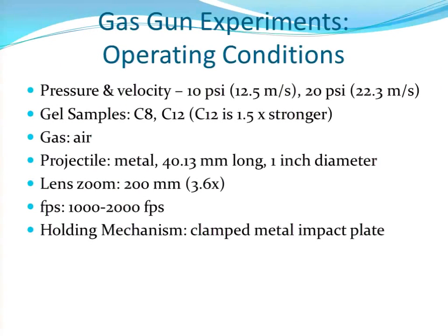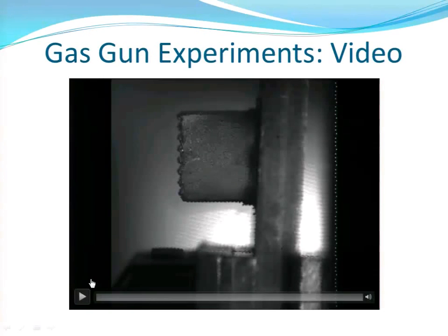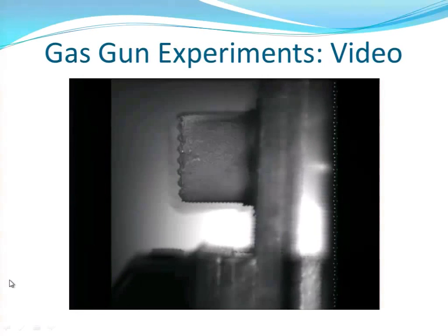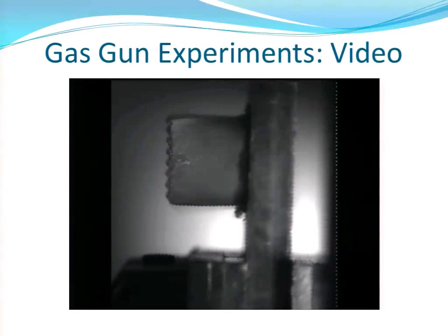Here are the specs of the experiment. We only went up to 10 and 20 psi in our gas gun, which was only about up to 20 meters per second — pretty slow. We used air and a 1-inch metal projectile, and our camera had frame rates up to about 2,000 frames per second. Here's the test — you'll see the projectile comes in from the right and hits it, and you can actually see a wave propagating through.